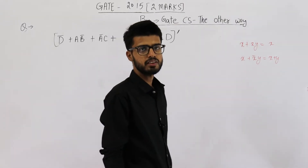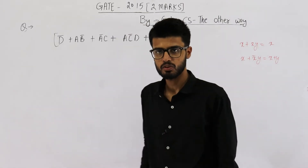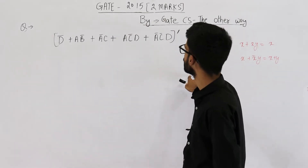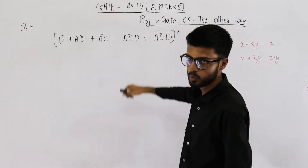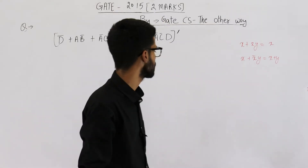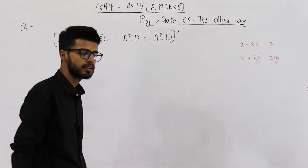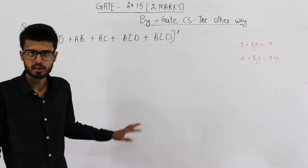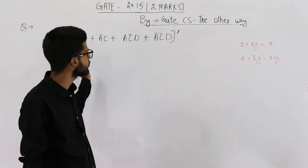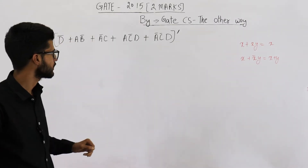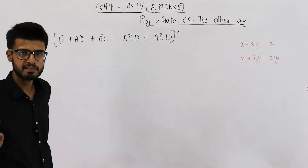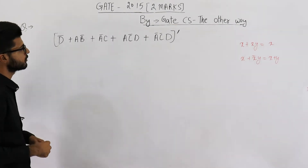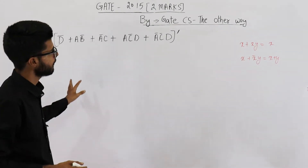Hello students, this question is from GATE 2015 exam set 2 and is for 2 marks. So let us solve this one. They are asking what is the number of minterms after minimizing this boolean expression. So first of all let's minimize it.